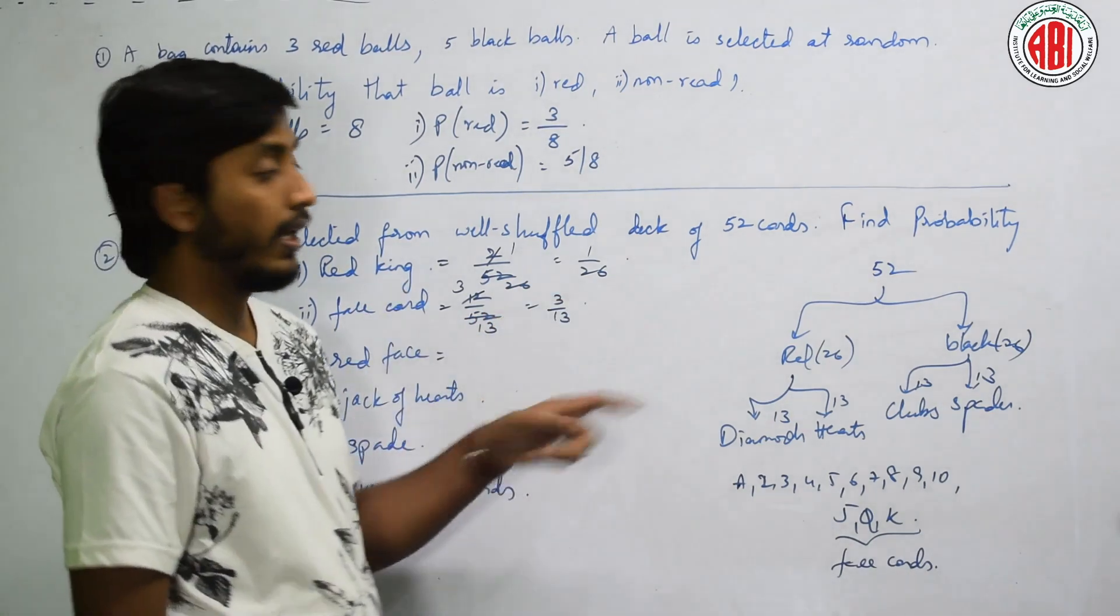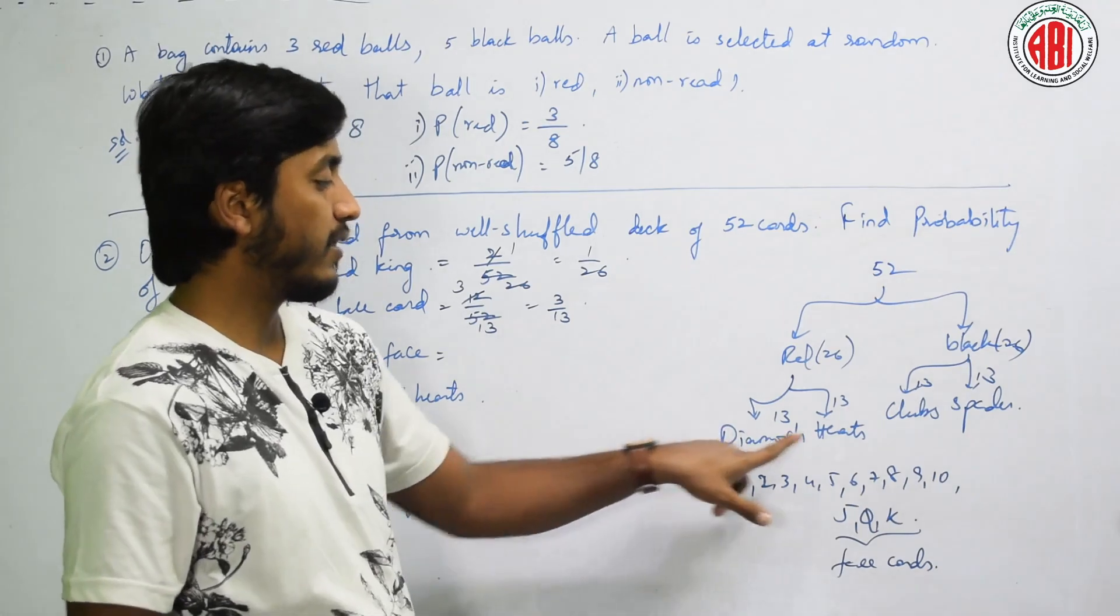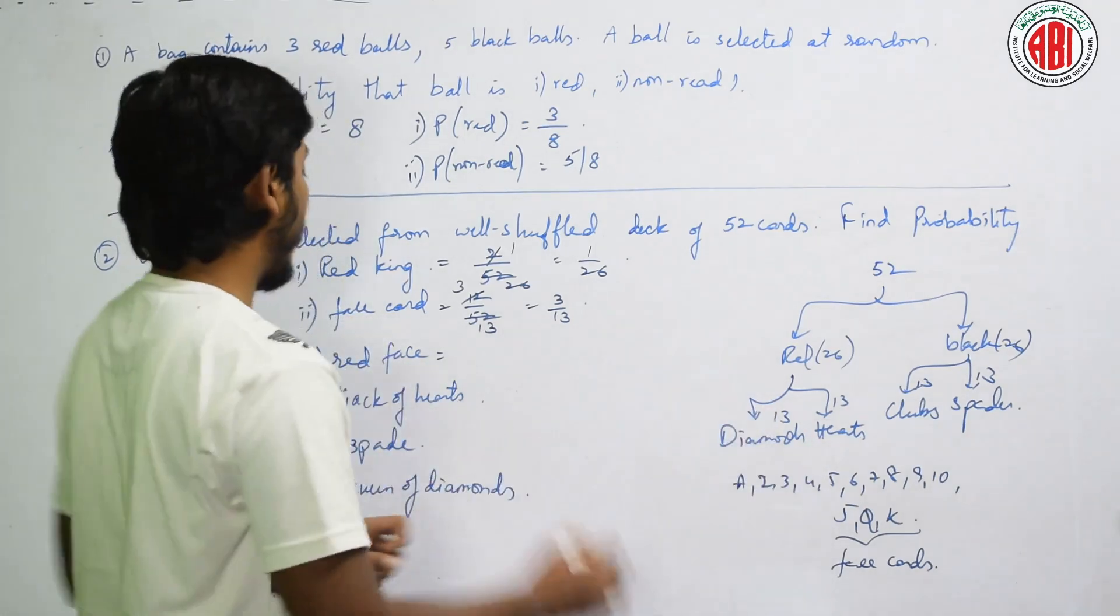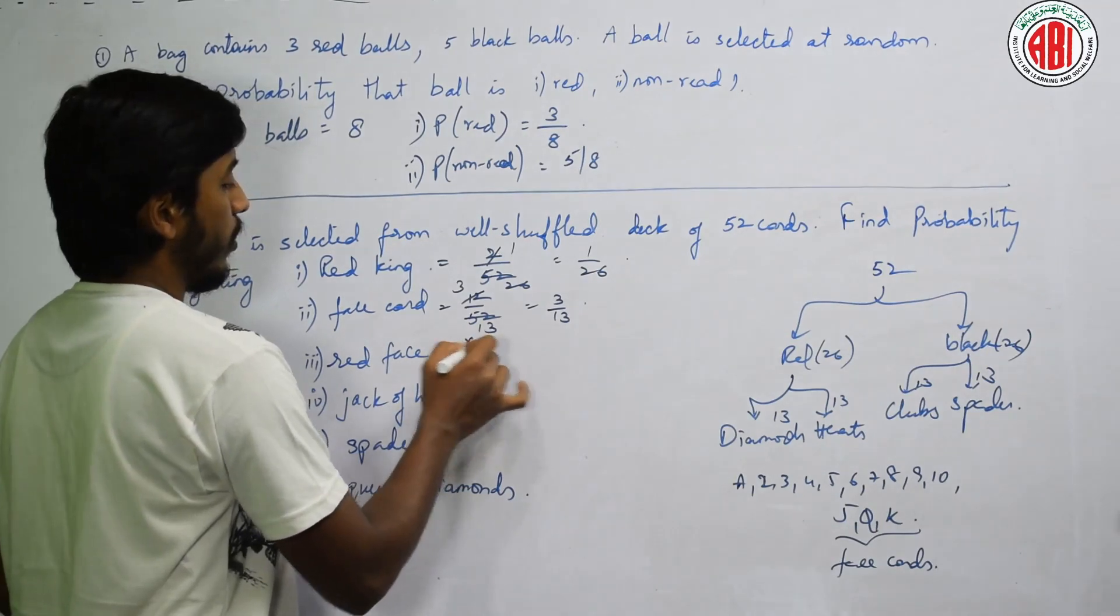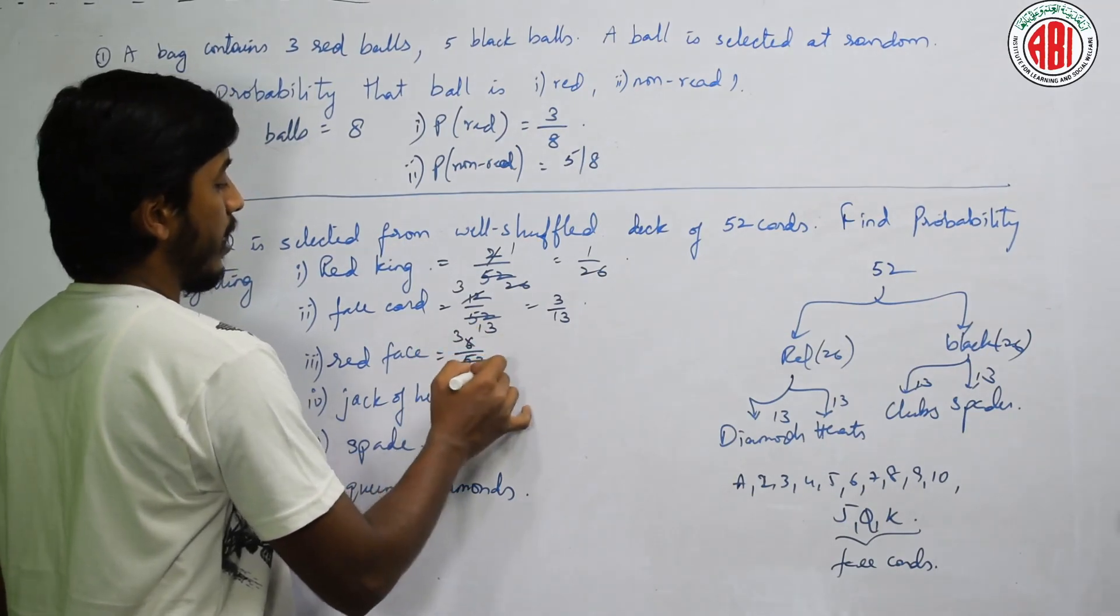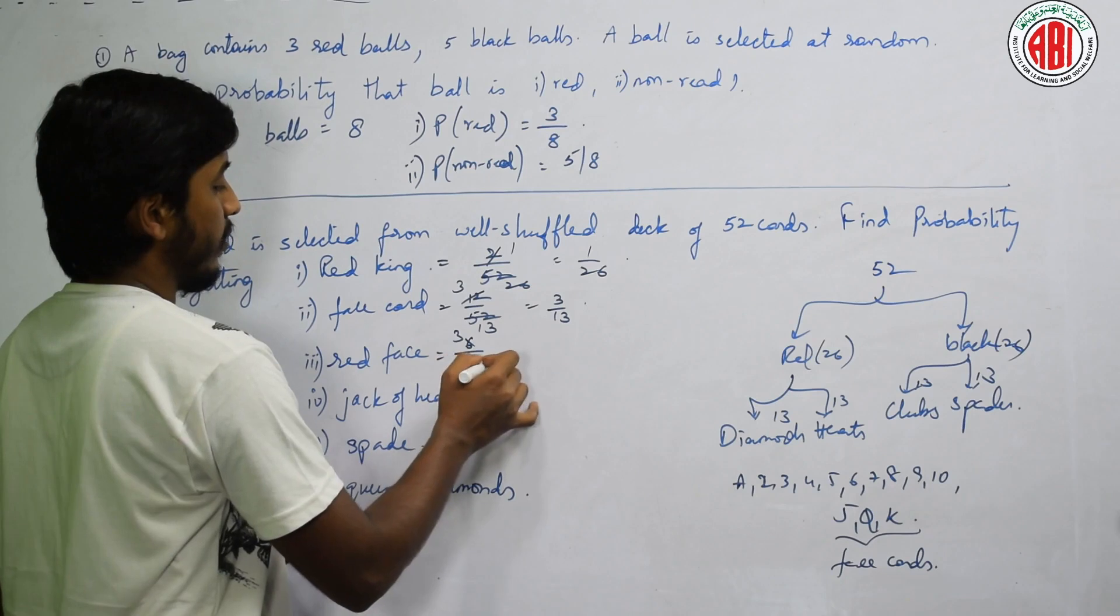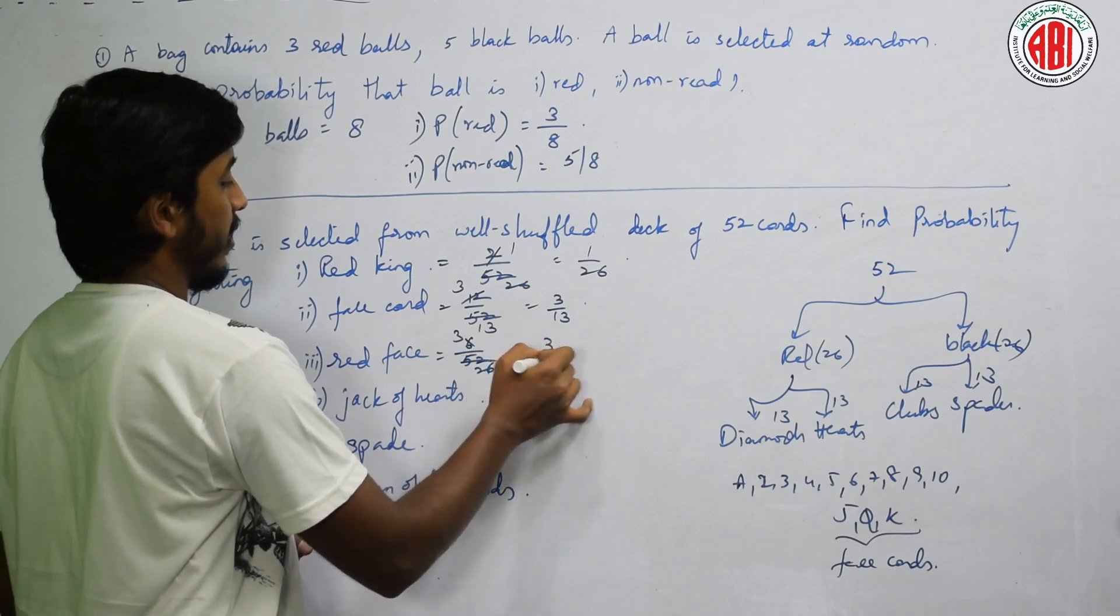Red face card. Red me 3 or is me 3? Total 6 by 52. 2, 3 times 2. How much is it? 26. That is answer is 3 by 26.